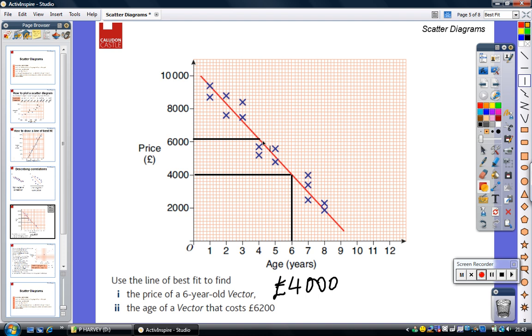And now I'm interested in reading off the age. So I'm going to go down and that seems to indicate the age of a vector that costs £6,200 will be four years.